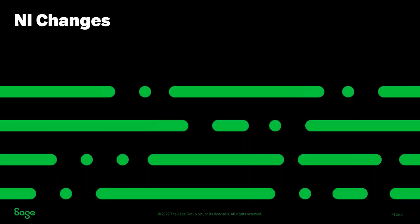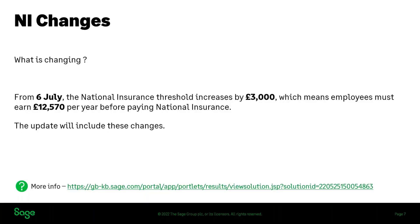Next we'll look at the national insurance changes — this is the reason for the update, announced just prior to year end. From the 6th of July, the national insurance threshold increases by £3,000, which means employees must earn £12,570 per year before paying any national insurance. The update includes these changes automatically, so there's nothing different to do when processing once you've done your install.